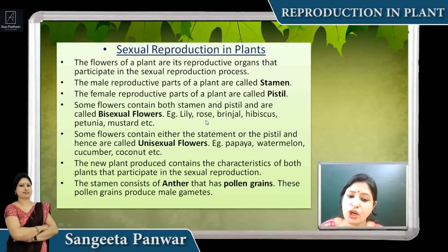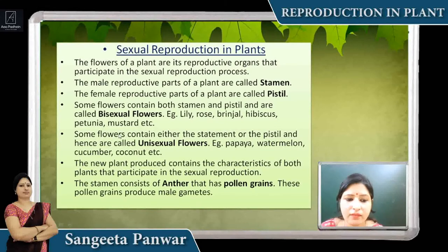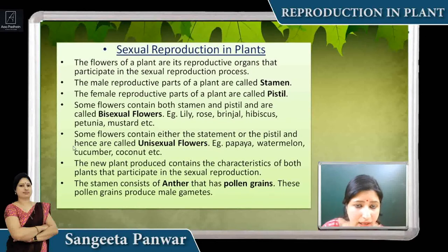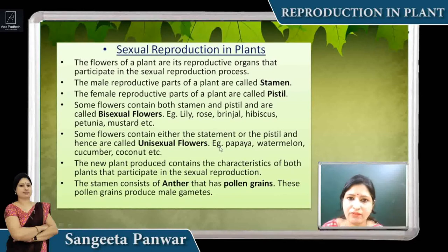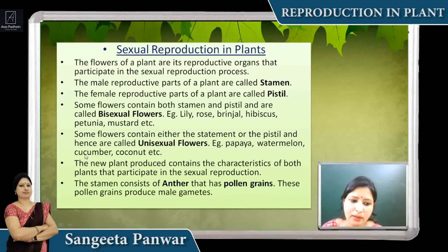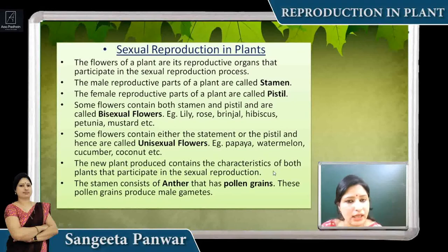Examples of bisexual flowers are lily, rose, brinjal, hibiscus, petunia, and mustard. Similarly, if a flower contains either only male or only female gametes, it is called a unisexual flower — meaning either male or female is present in the flower. Examples of unisexual flowers are papaya, watermelon, cucumber, and coconut. The new plant produced carries characteristics of both plants that participate in sexual reproduction.